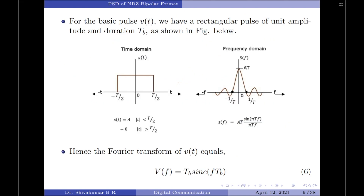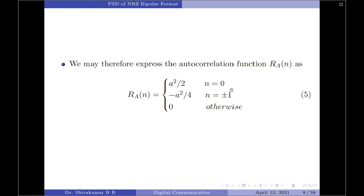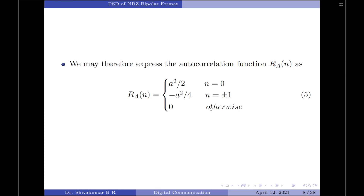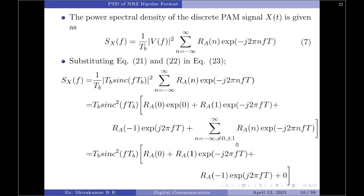Now let us expand the autocorrelation summation. Since we have autocorrelation computed for four cases (n = 0, n = 1, n = −1, and n > 1), we split the summation into four parts. The first part is R_a(0)·e^0 = R_a(0). Then R_a(1)·e^(−j2πfT), then R_a(−1)·e^(+j2πfT), and lastly the summation for all remaining n, which equals 0 since R_a(n) = 0 for |n| > 1.